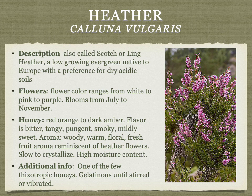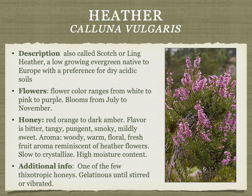Heather honey comes in two general types. Scotch or ling heather (Calluna vulgaris) produces a very complex honey — every tasting reveals more notes that are difficult to put into words. It ranges from red-orange to dark amber and can be bitter, tangy, pungent, smoky, mildly sweet, warm floral, with a fresh fruit aroma. It's slow to crystallize and often has high moisture content. Uniquely, it's one of the few thixotropic honeys — gelatinous rather than liquid, it won't flow and must be harvested by stirring or vibrating rather than centrifugal extraction. It's expensive and hard to find but strongly recommended.